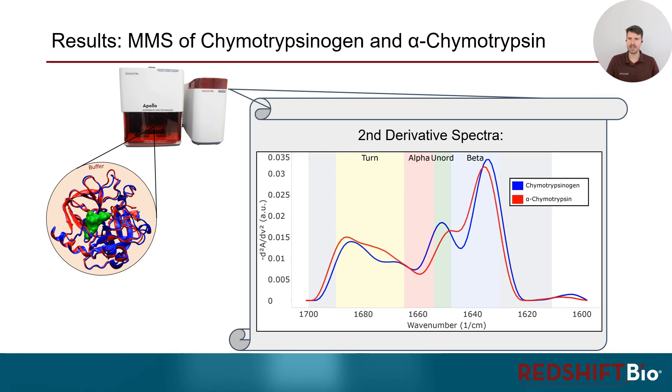Overlaying the spectrum of the active enzyme, shown here in red, reveals subtle spectral differences in all of those regions. By doing an area of overlap analysis, we find that the overall spectral difference between the inactive and the active form amounts to about 10%.